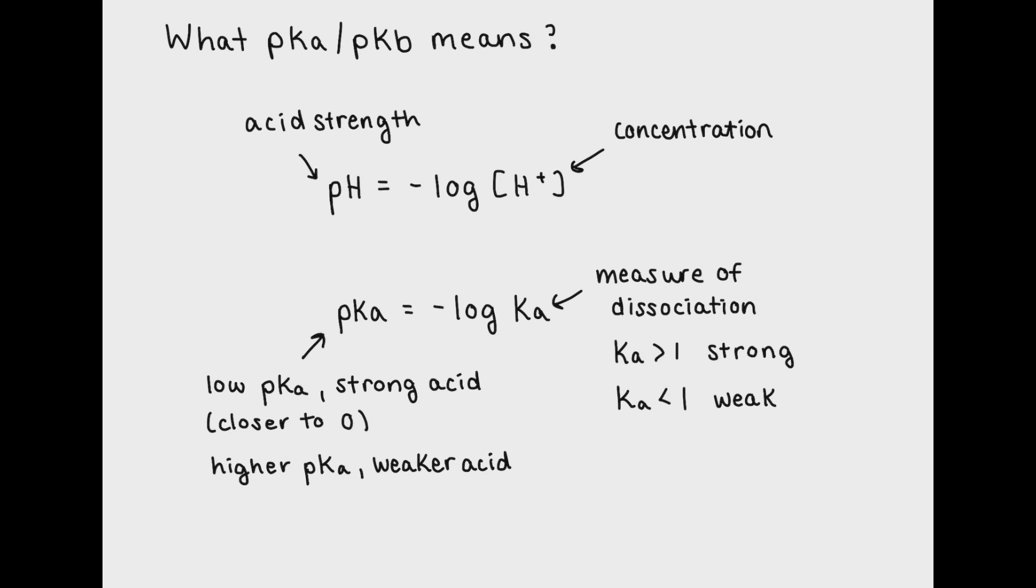A Ka of greater than one means that there are more ions in solution. This means for a weak acid, there's a larger amount of H plus ions in solution. pKa then quantifies the amount of ions in solution with a number that's on a logarithmic scale.